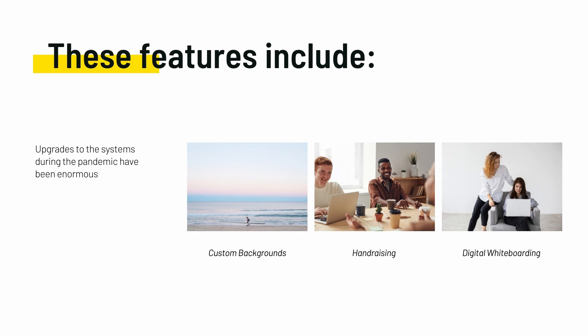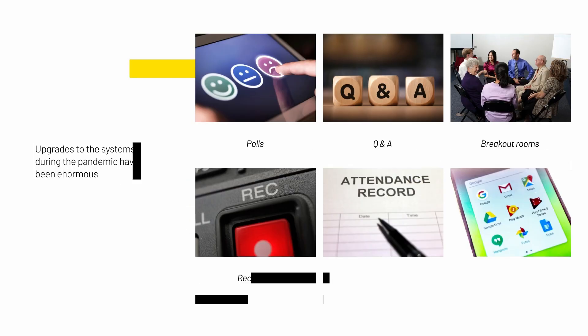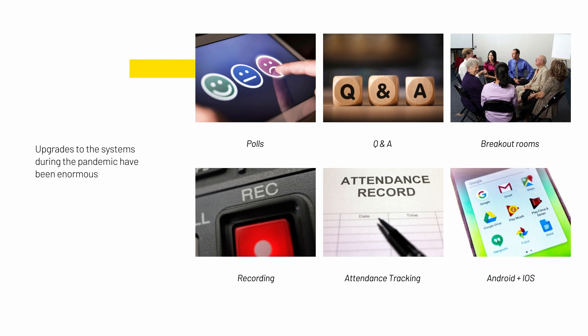Within Meet and Zoom you've now got custom backgrounds, hand raising, digital whiteboarding — so you can have a digital whiteboard and share it with everybody in the meeting — polling, Q&A, and breakout rooms, which was originally a huge difference between Meet and Zoom. You've also got recording, so you can record a Google Meet or a Zoom call, and attendance tracking so you can see who actually came to your meeting. All of these are very popular for training.